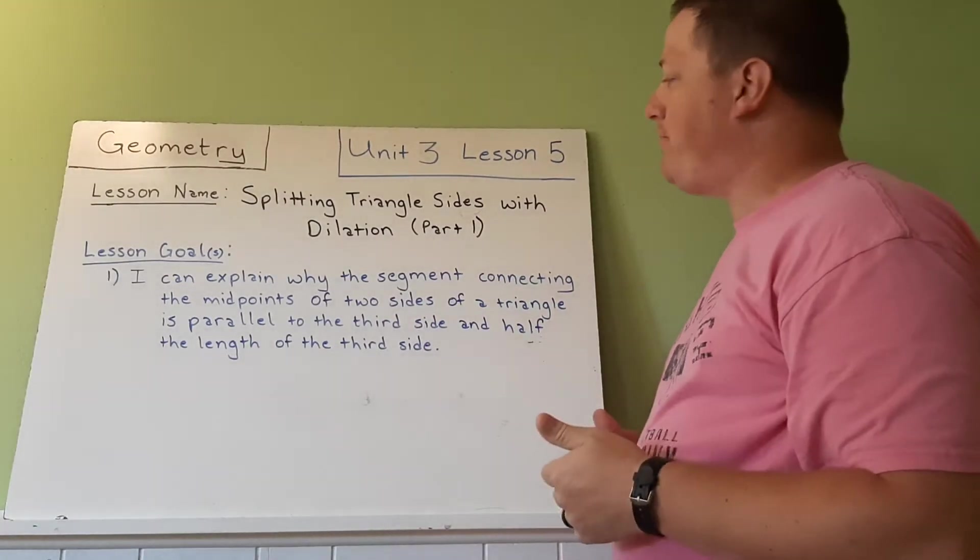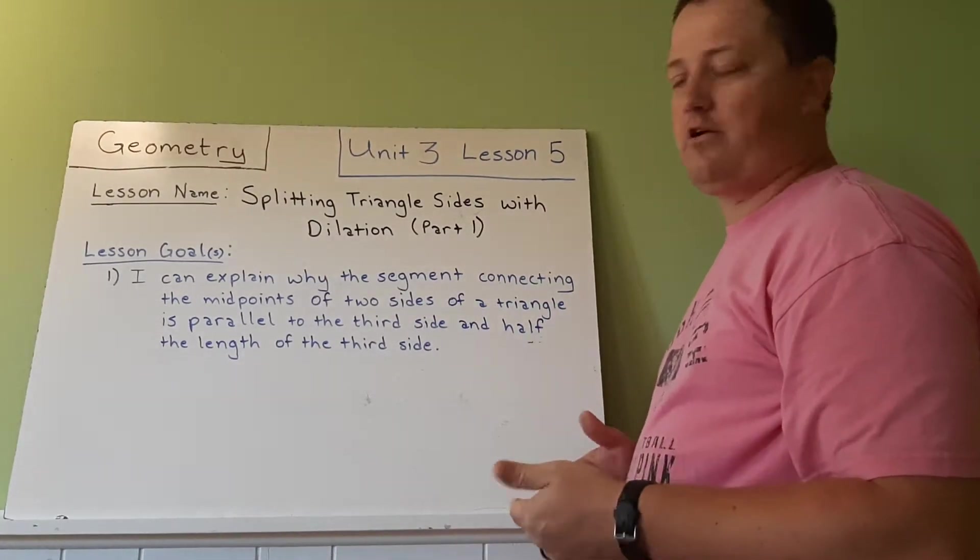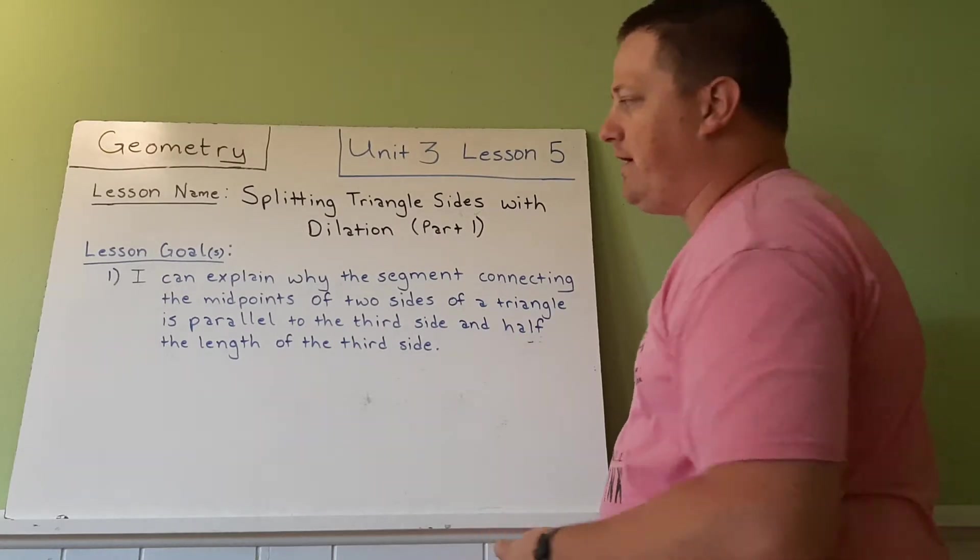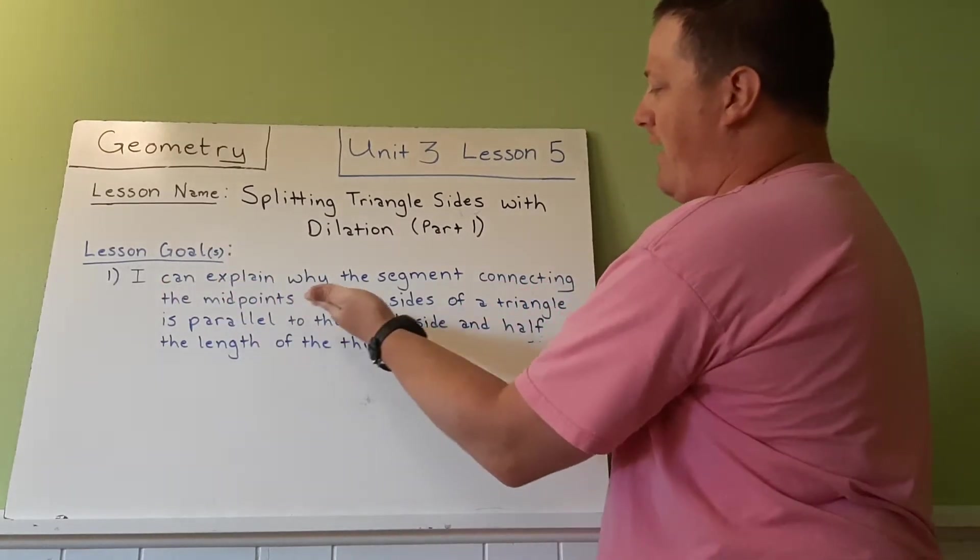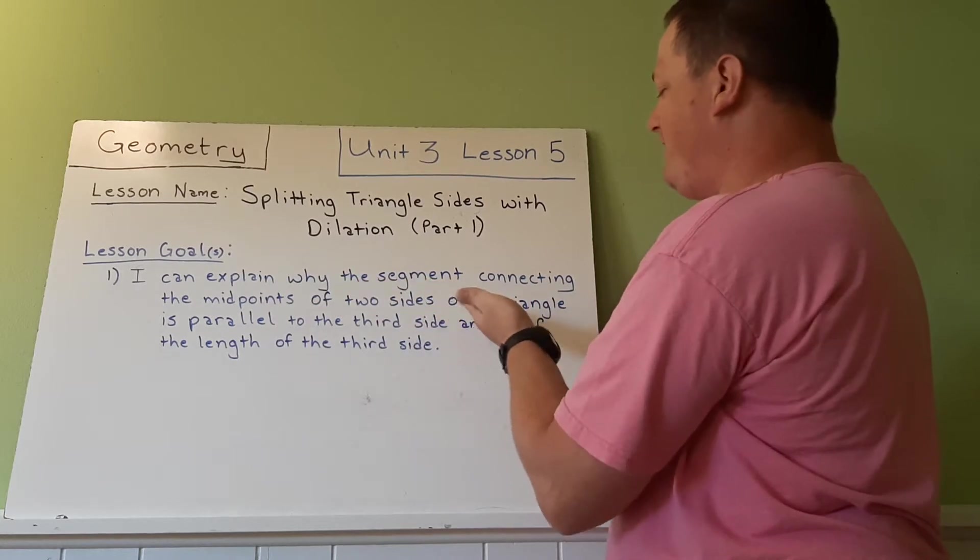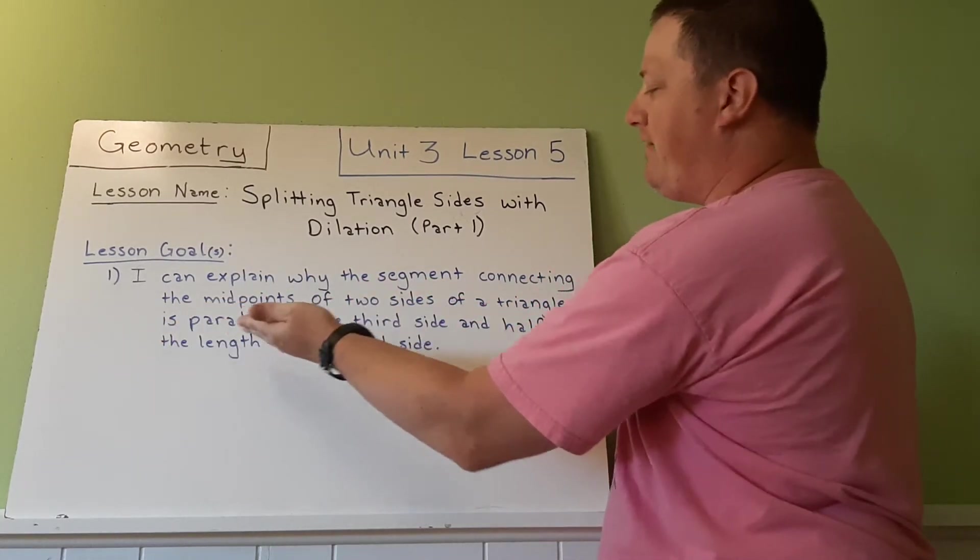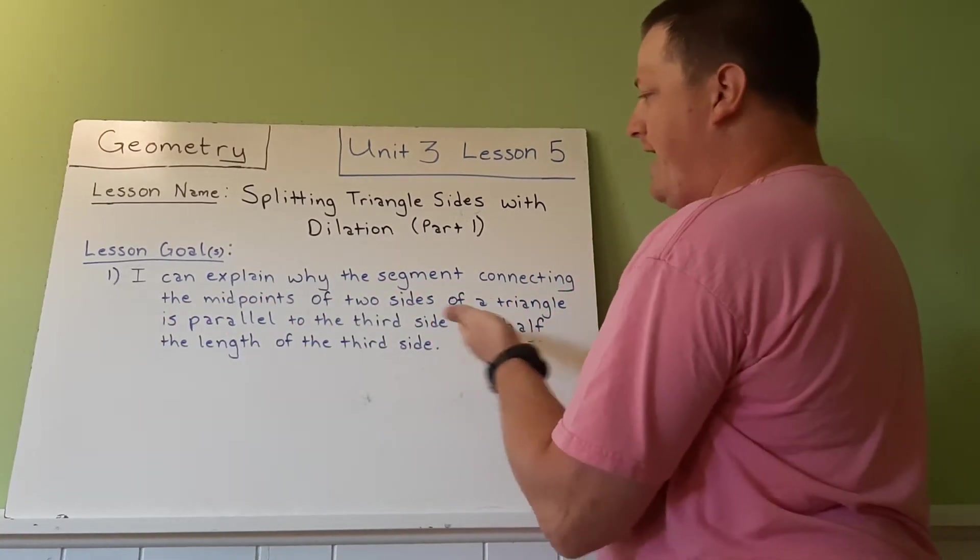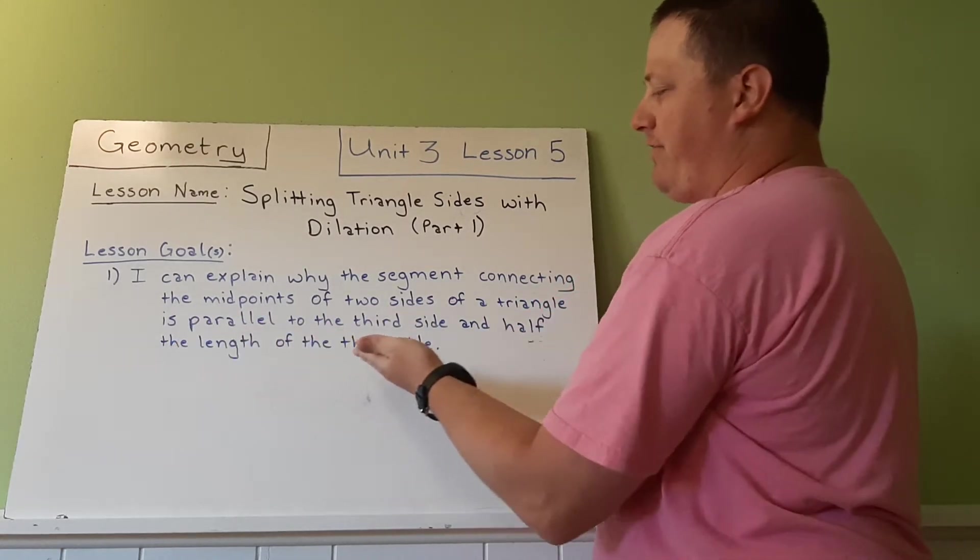We're going to have another part to this later on. There's one goal here. I can explain why the segment connecting the midpoints of two sides of a triangle is parallel to the third side and half the length of the third side.